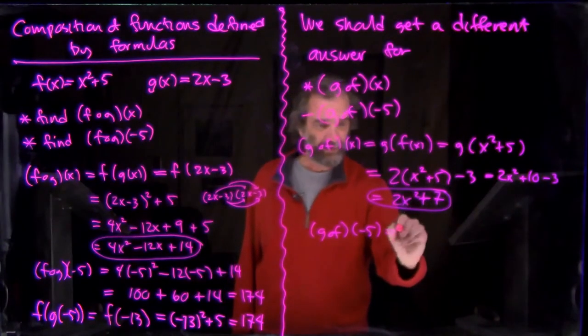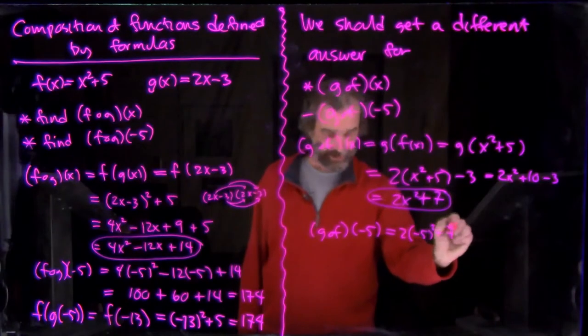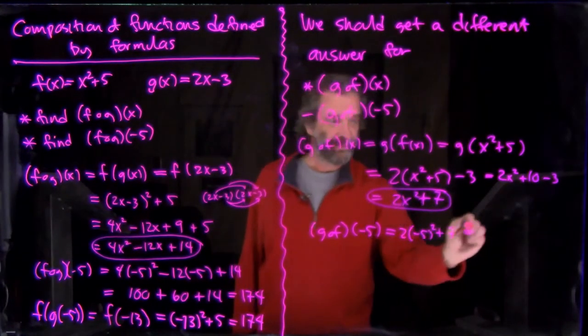So we get 2 times (-5)² plus 7, which is, that's 25, times 2 is 50 plus 7. 57.